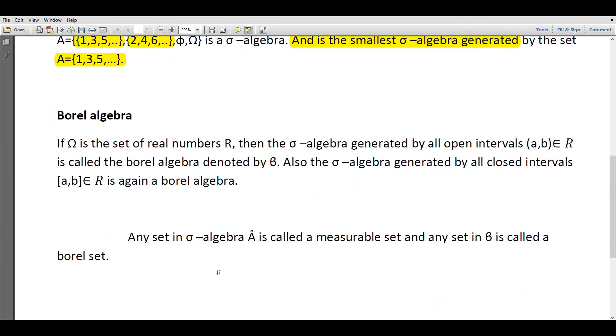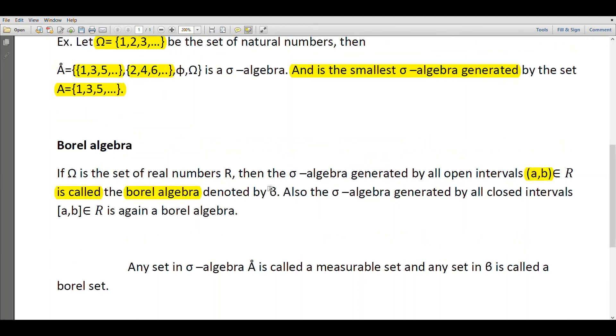The only difference is if our sample space is the set of real numbers, then the σ-algebra generated by all open intervals (a,b) in R is called the Borel algebra, denoted by script B.